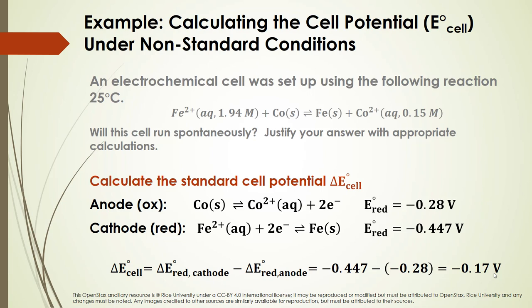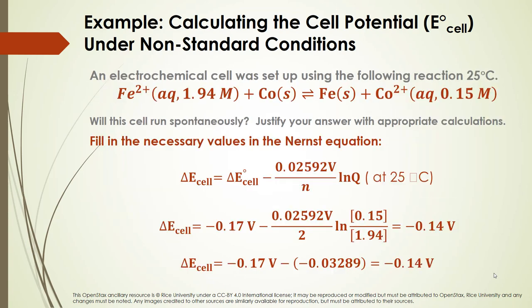Do those concentration differences change anything? Let's plug our values into the Nernst equation: negative 0.17 volts minus (0.02592 / 2) times the natural log of (0.15 / 1.94). When we do the math, we end up with negative 0.14 volts — still non-spontaneous. The correction term is positive, but not large enough to overcome the negative standard cell potential.